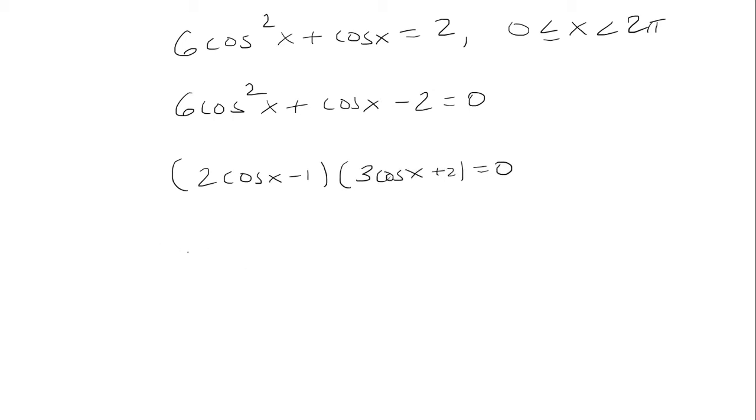So I'm going to set each factor equal to 0. I'm going to add 1 to both sides, divide by 2, and get that cosine as 1 half.